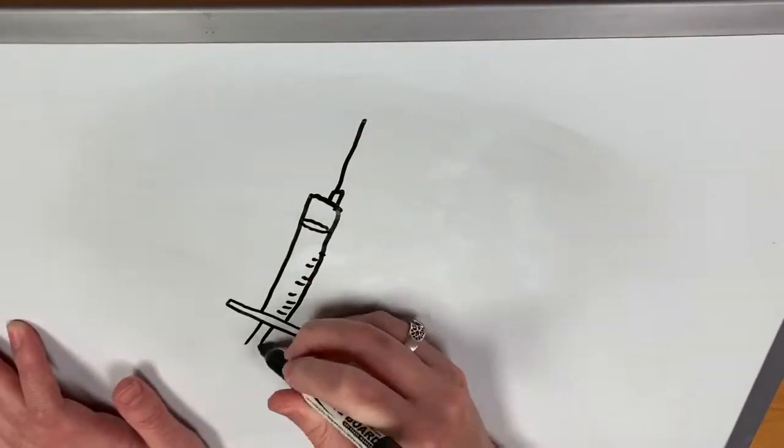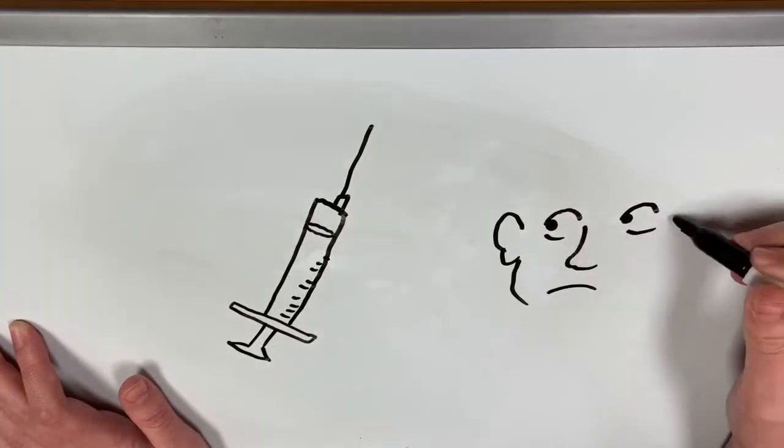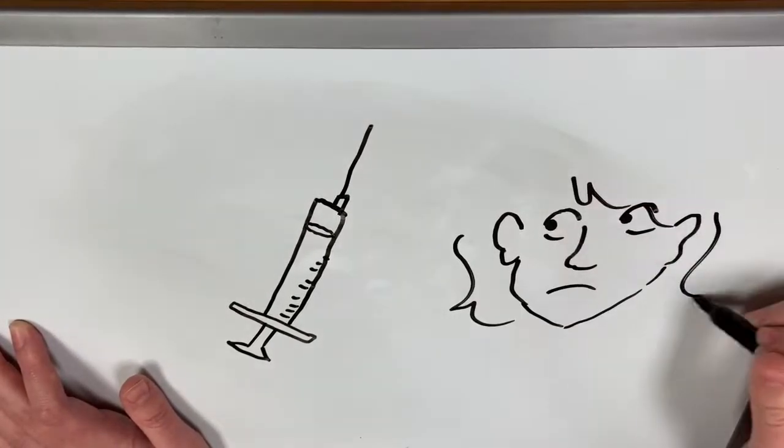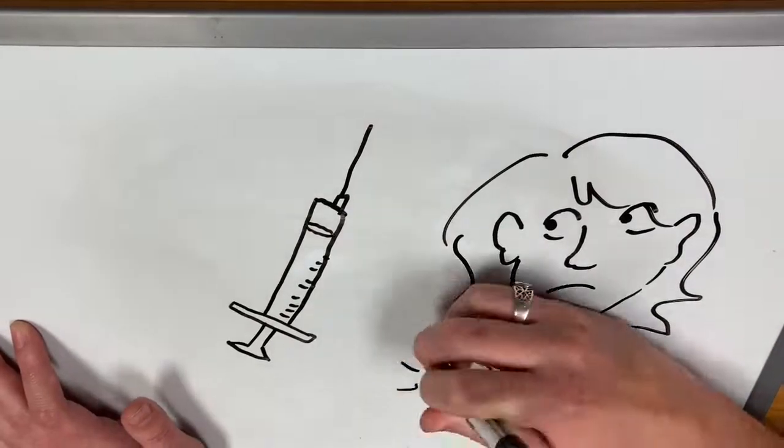Salk went on to attend the University of Michigan on a research fellowship to develop a flu vaccine. This was where he learned the methodology of vaccine development. He worked to research the polio vaccine in 1947. This was his major contribution to public health.